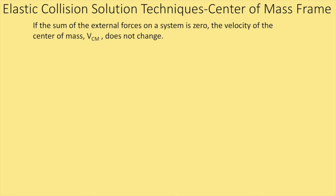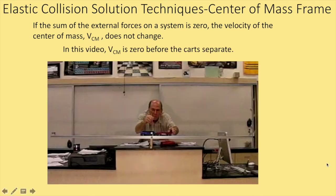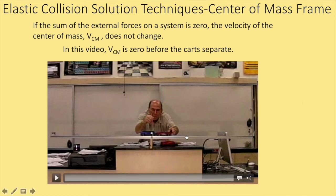If the sum of the external forces on a system is zero, then the velocity of the center of mass of the system can't change. In a collision, the forces between the objects are internal forces. So the velocity of the center of mass before a collision is the same as after. We can exploit that to solve elastic collisions — but I want to build up to that because it's important you understand why this works, not just how to apply it. So here's a demonstration of center of mass and velocity of center of mass: two carts on a track balanced on a thin board.